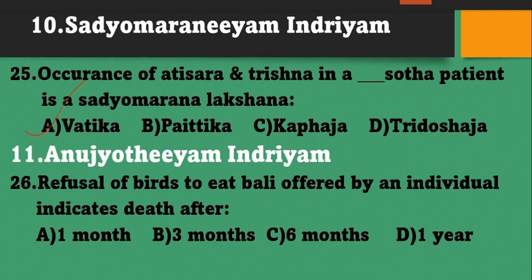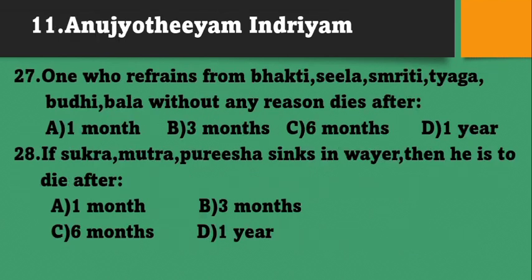Anujyodiyam: Refusal of birds to eat the bali offered by an individual indicates death after 1 month, 3 months, 6 months, or 1 year? Option D - one year. One who refrains from Bhakti, Sheela, Smriti, Tyaga, Buddhi, and Bala without any reason dies after 1 month, 3 months, 6 months, or 1 year? Dies after 6 months. Option C.